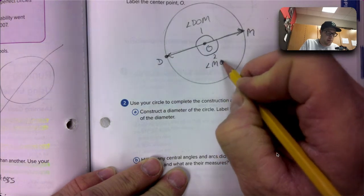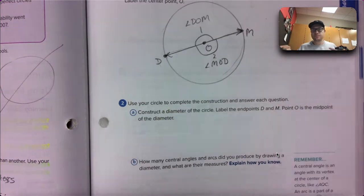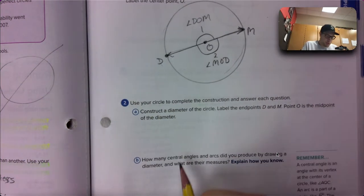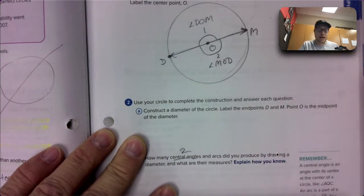How many arcs does that produce? Remember arcs are the distance around the edge. So here is an arc and also here is an arc.